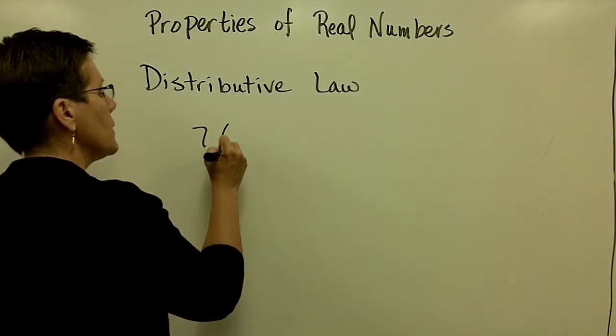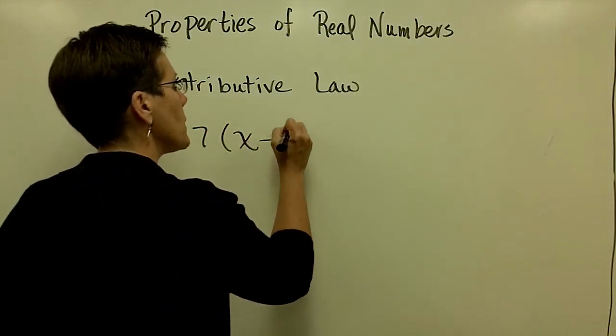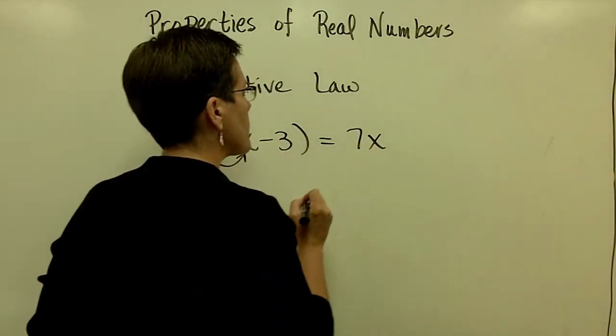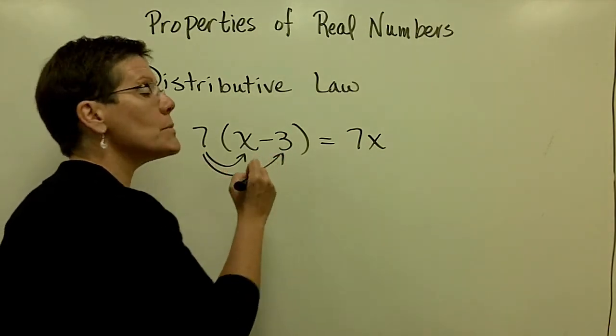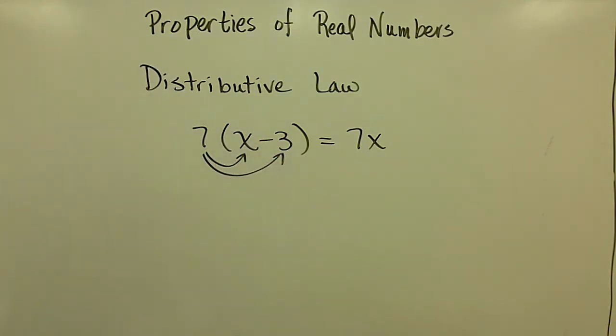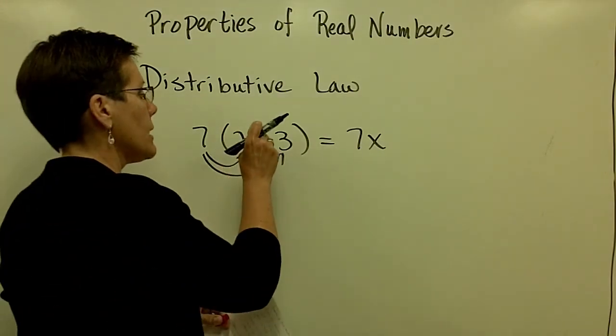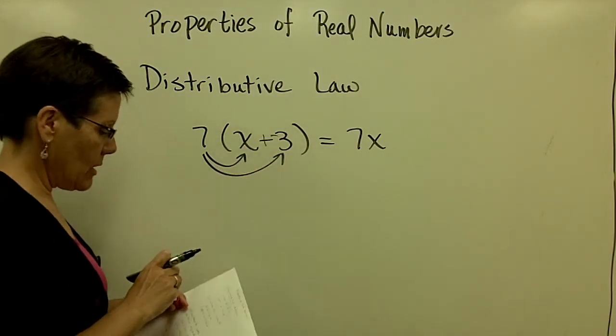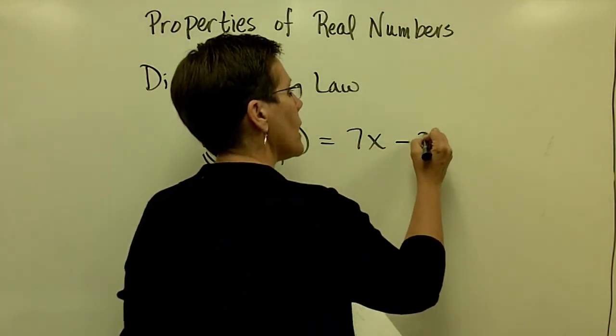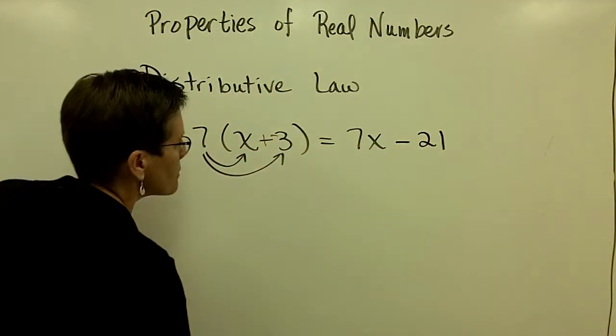If I had a minus sign in there, if I had 7 times x minus 3, I'd have 7 times x, which is 7x. And 7 times a negative 3, essentially that's a negative 3, plus a negative 21, or I'm just going to write that as 7x minus 21.